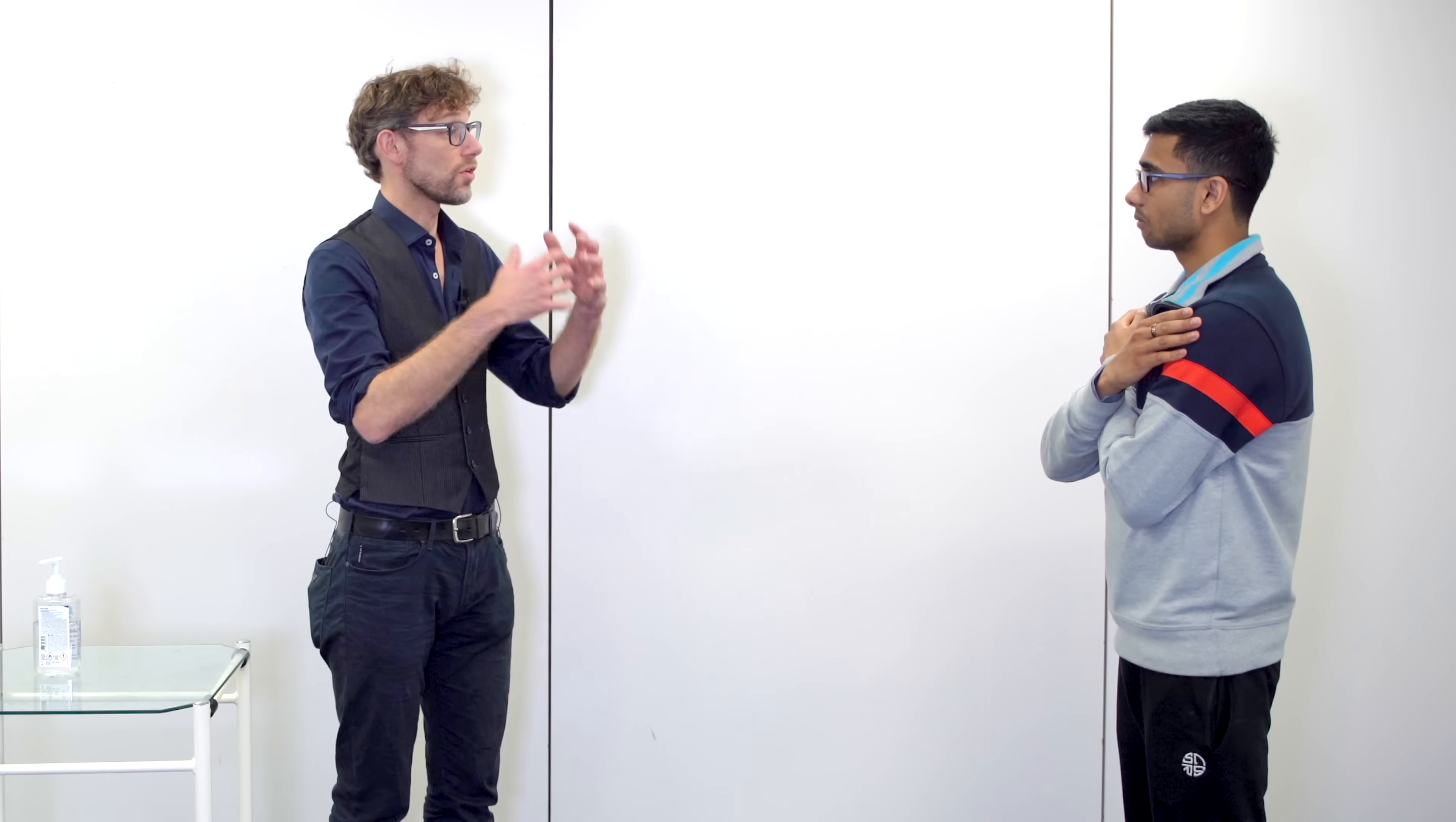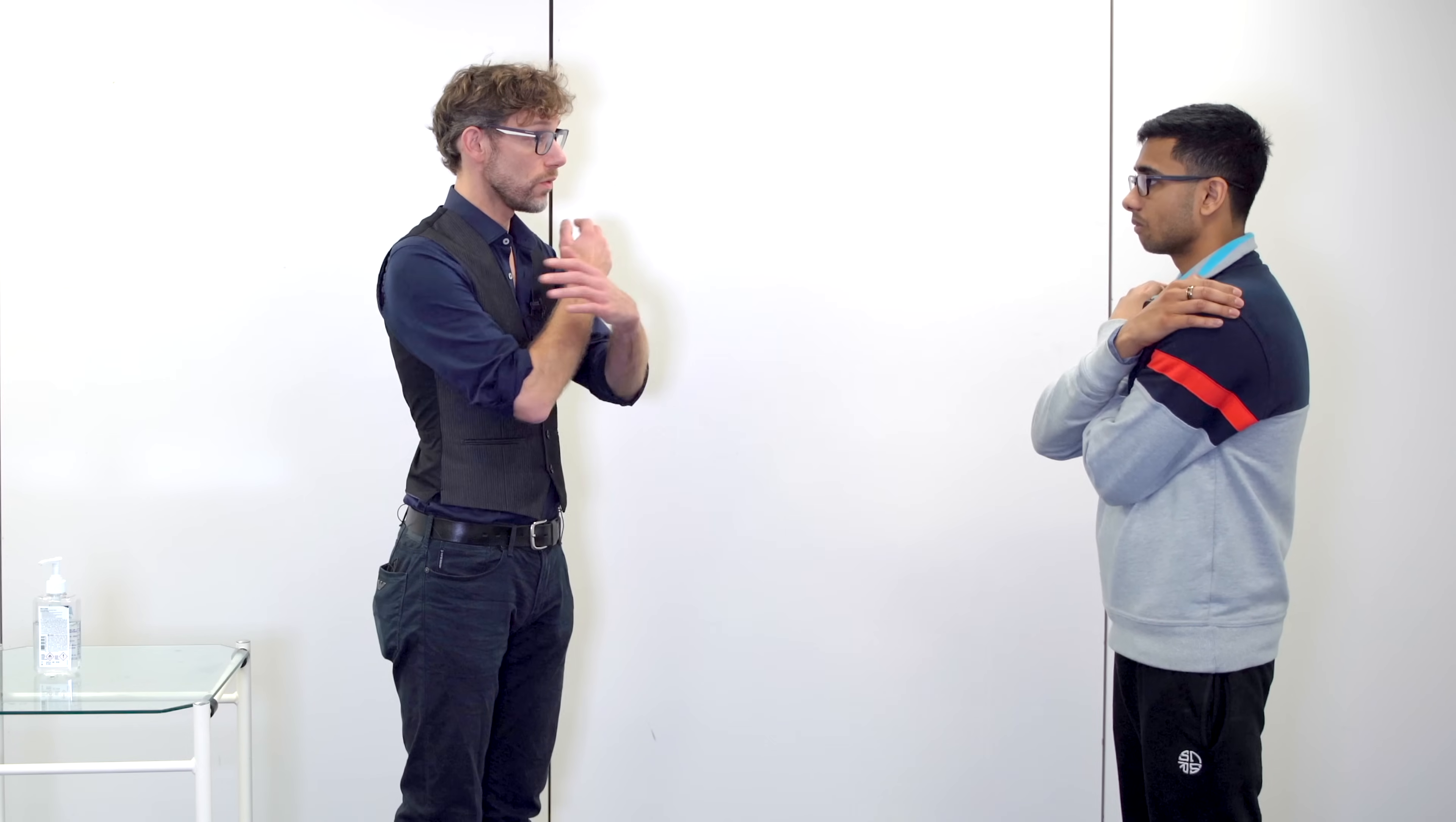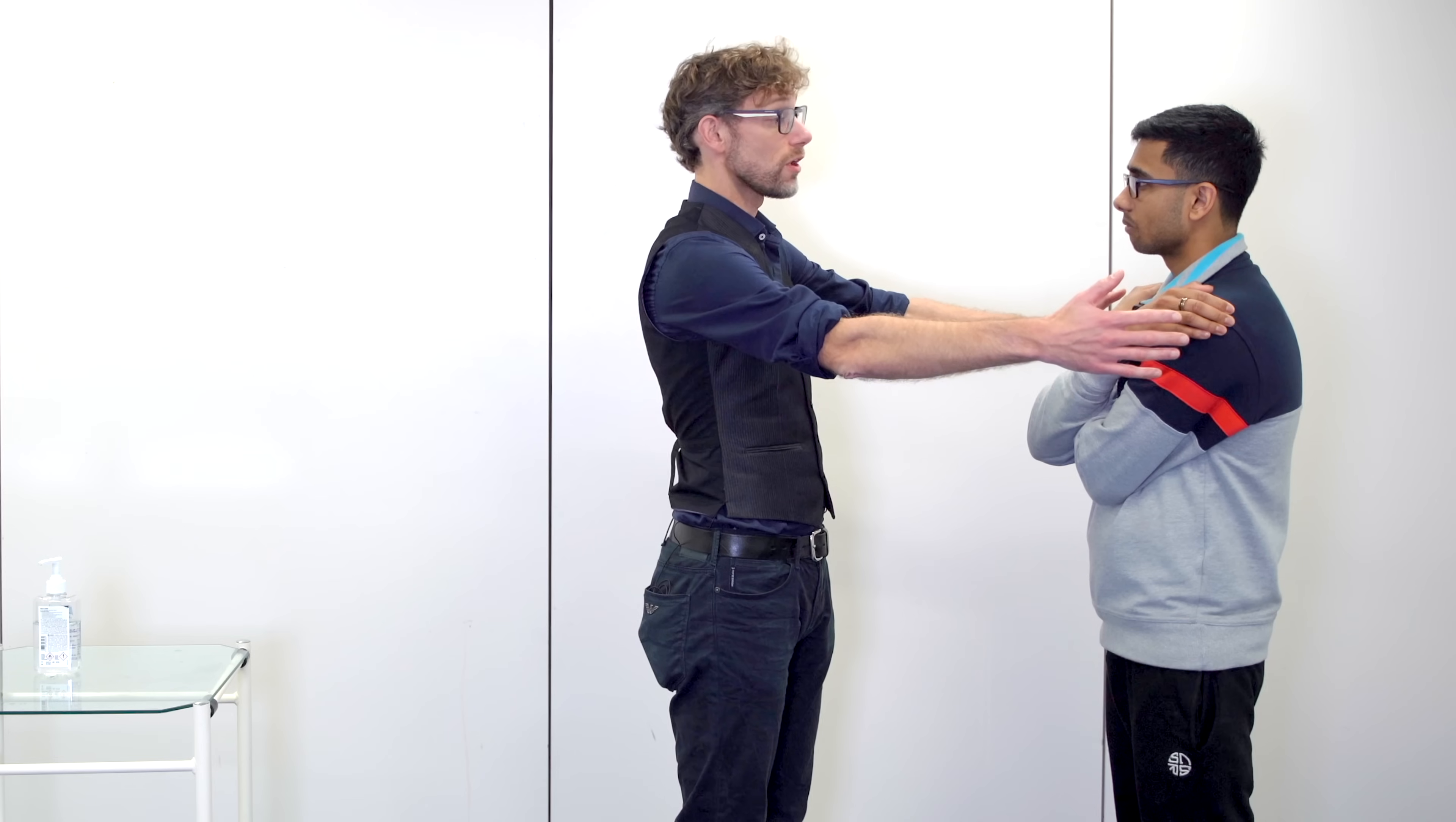Thank you. So that was the normal part of the test. Now we're going to make it slightly more difficult. Again, keeping your legs shoulder-width apart with your arms crossed over your chest. I'm going to put my hands either side of you. You will not fall. If there's any problems, I'll tap you to one shoulder or the other or stop you moving overall. And I'm going to ask you to close your eyes.